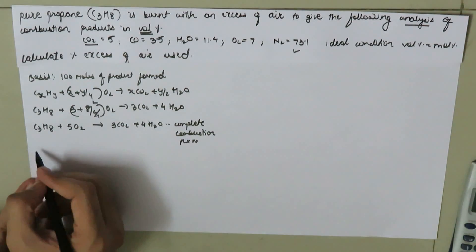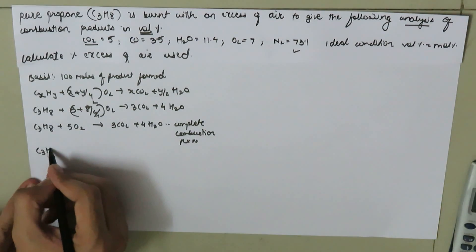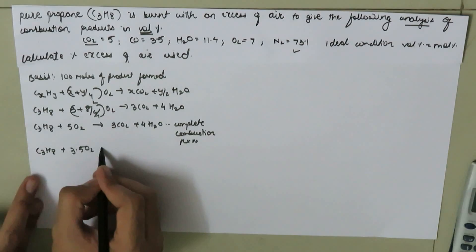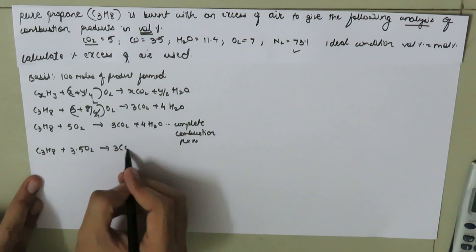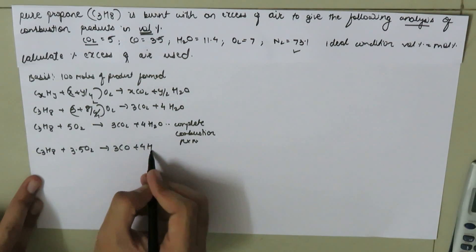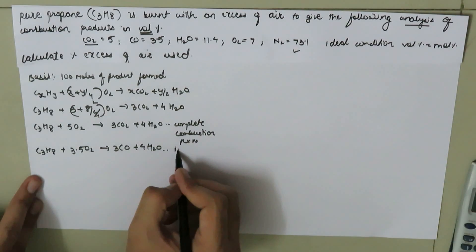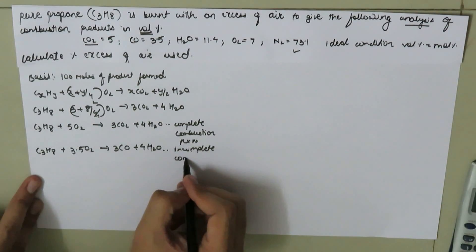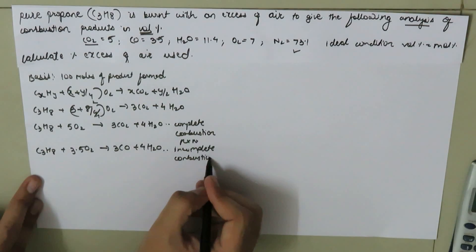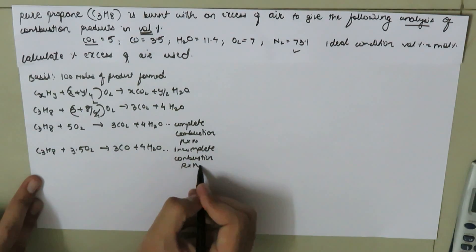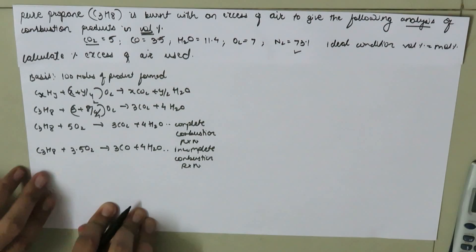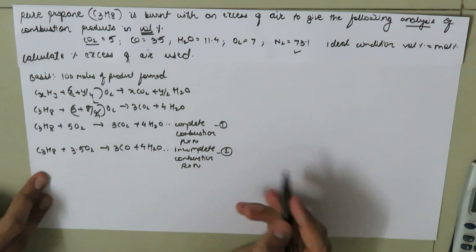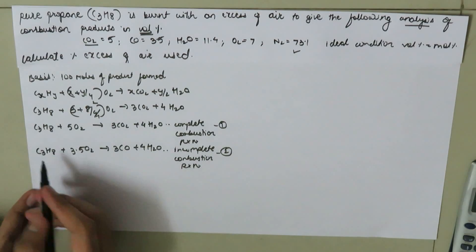The incomplete combustion reaction is: C3H8 + 3.5 O2 → 3 CO2 + 4 H2O. We call this reaction number one and this is reaction number two.